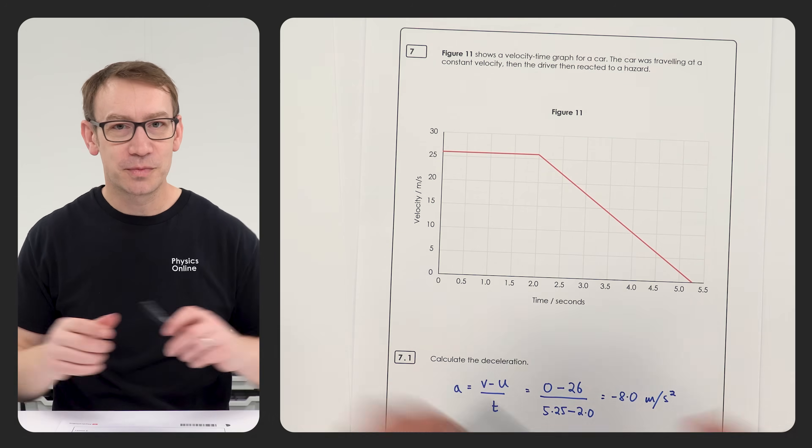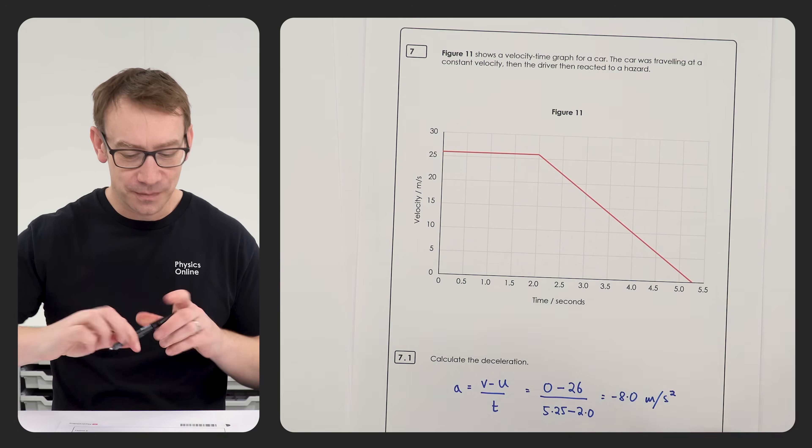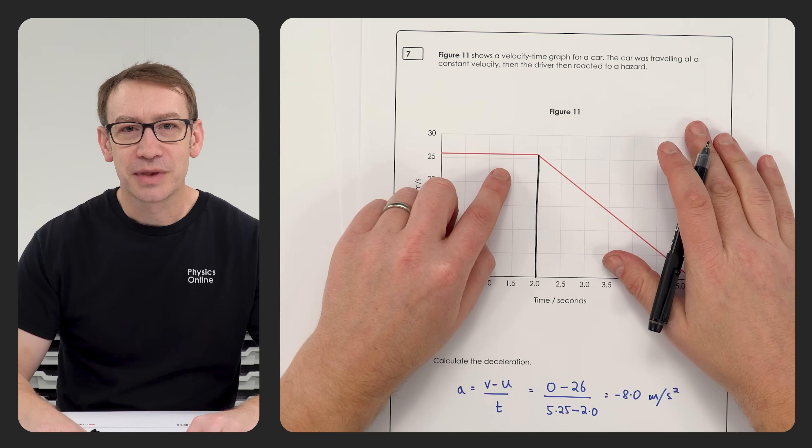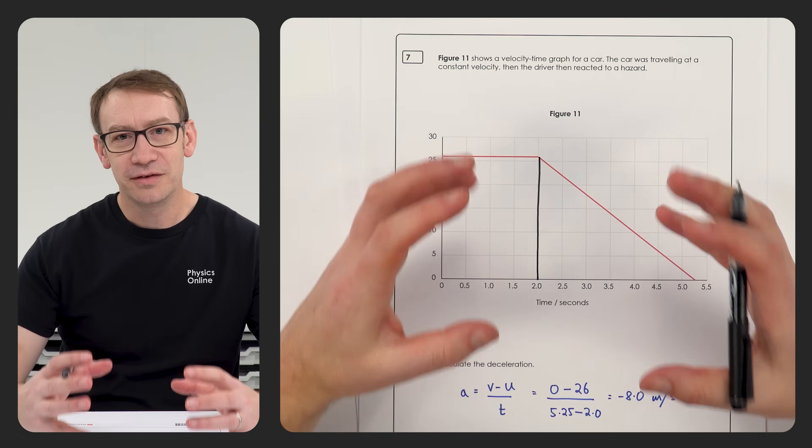Now what I'm going to do on the graph is I'm just going to break it into a couple of sections. So basically looking at this first part of the graph here, this is where the driver sees the hazard.